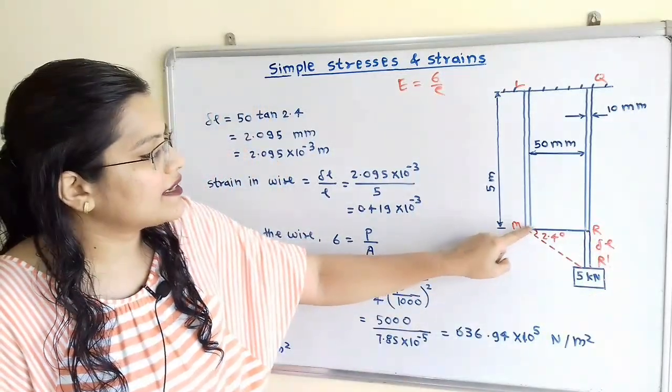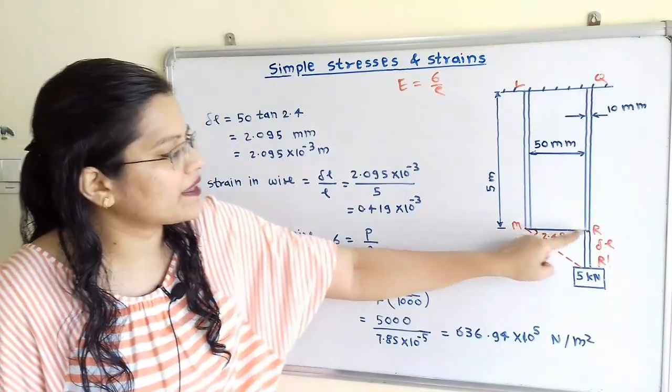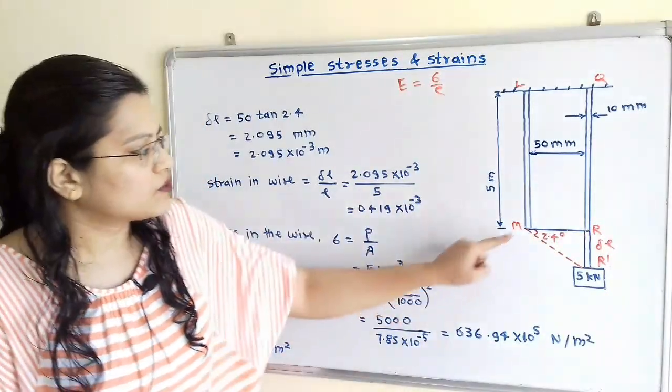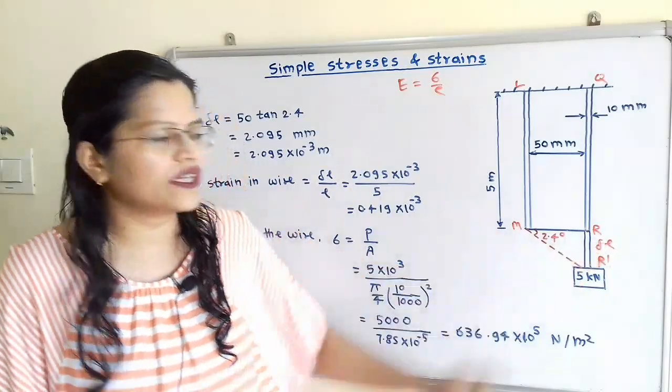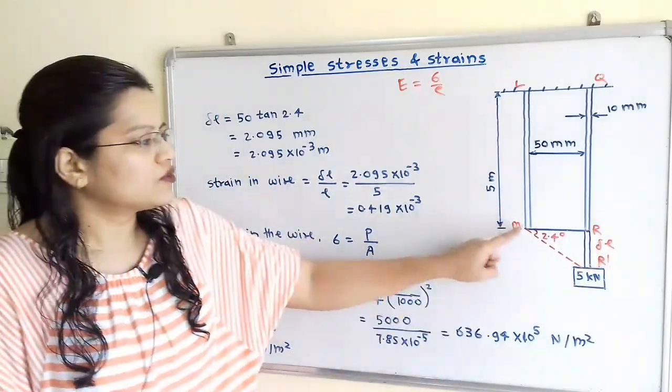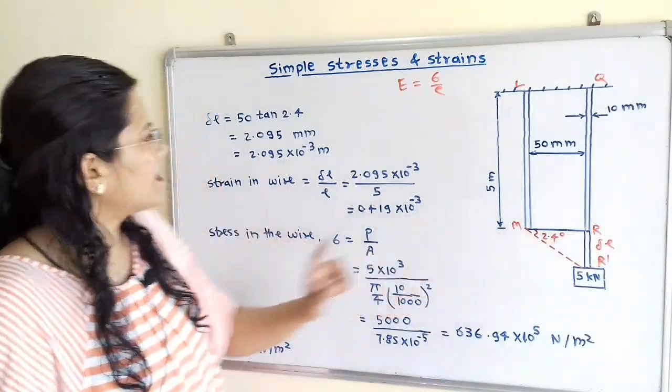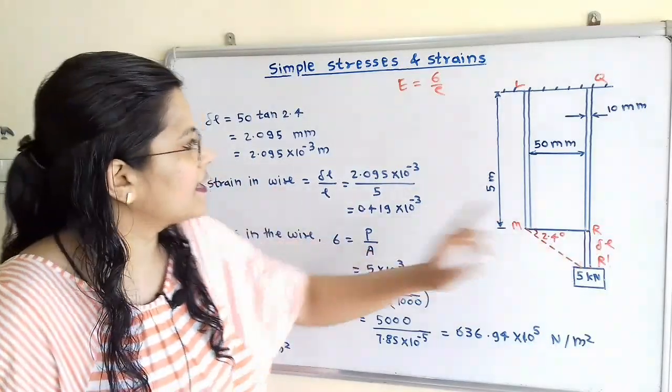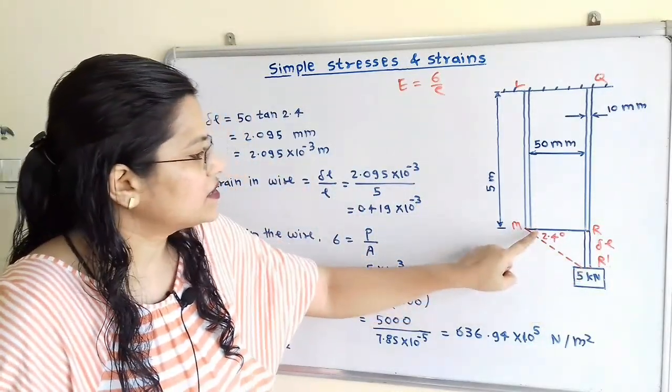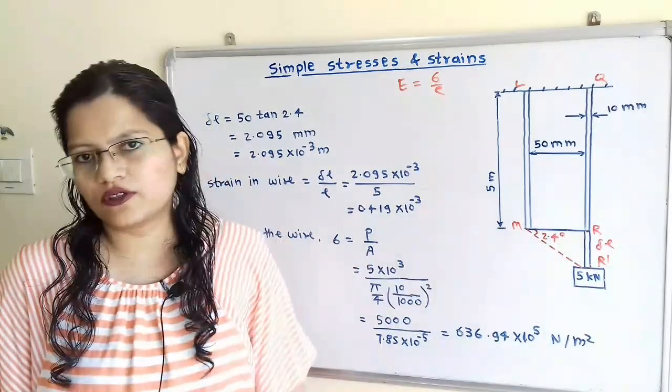then we know that the length of this horizontal bar MR is equal to 50 mm. So MR'R' is also equal to 50 mm. So in triangle MR'R', we can say that delta L is equal to MR' tan of 2.4 degrees.